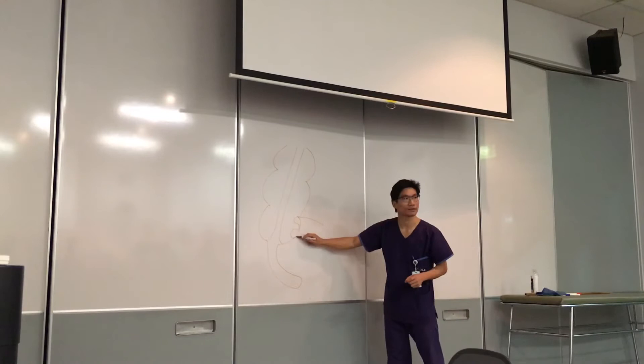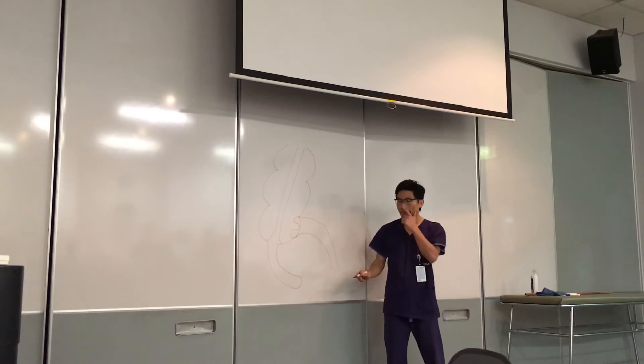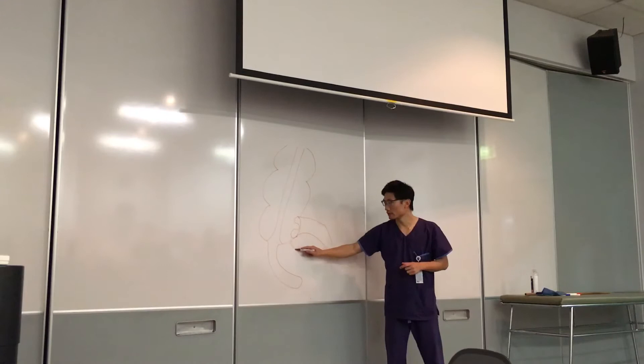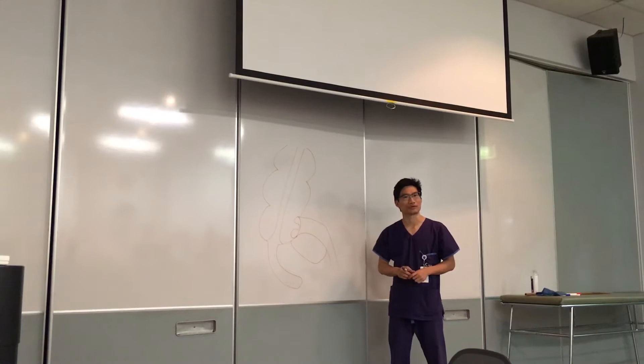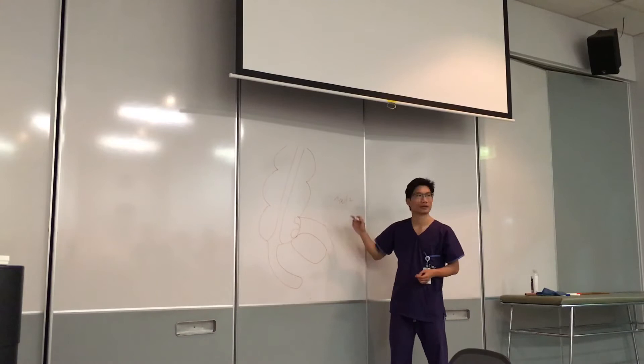And then your terminal ileum. Usually there's a little bowel here, just terminal ileum. Then your TI will come around like so. There's an anti-vascular fold of fat here. It's called the fold of Treves, an anti-vascular fold of Treves. T-R-E-V-E-S.